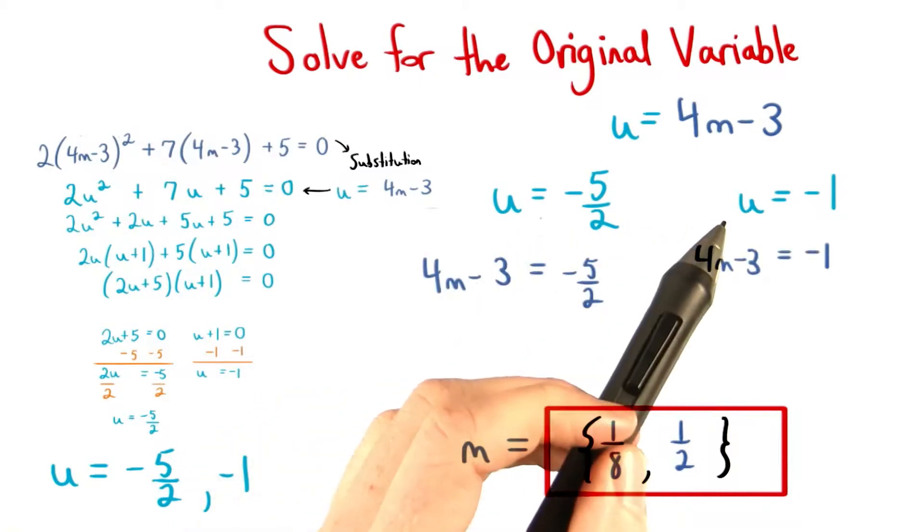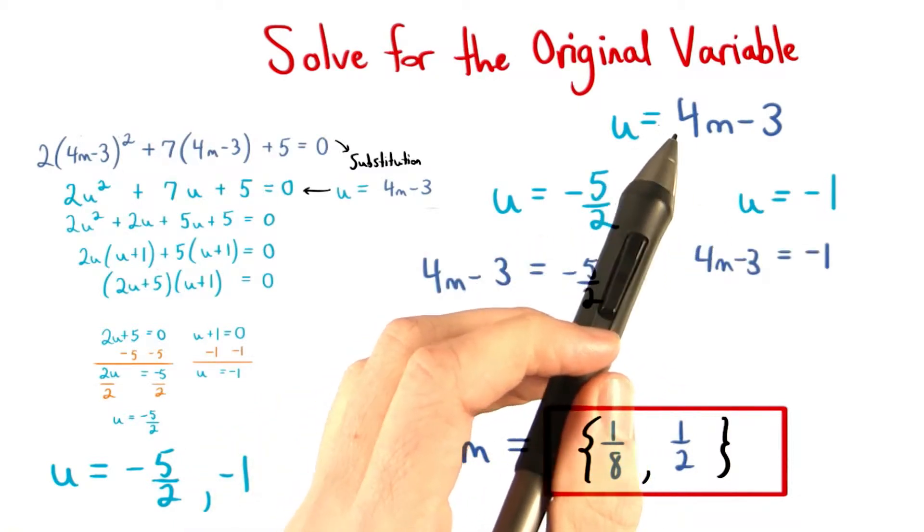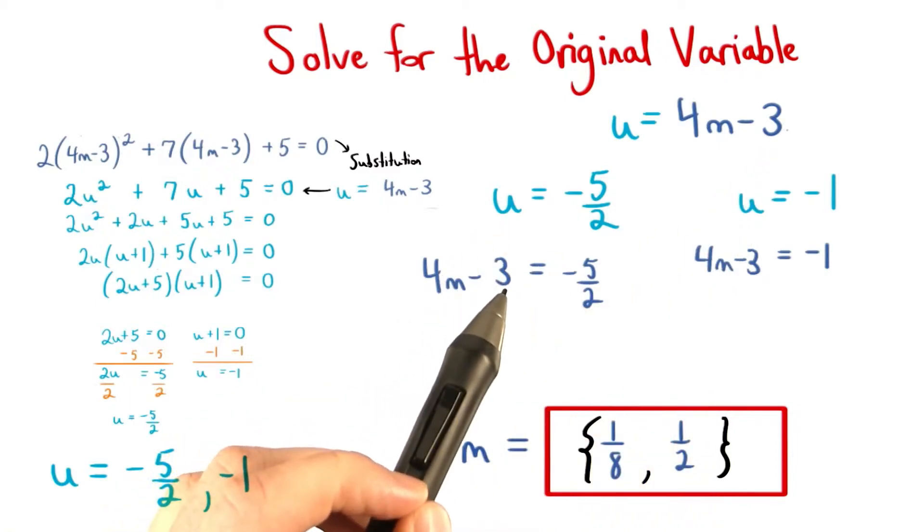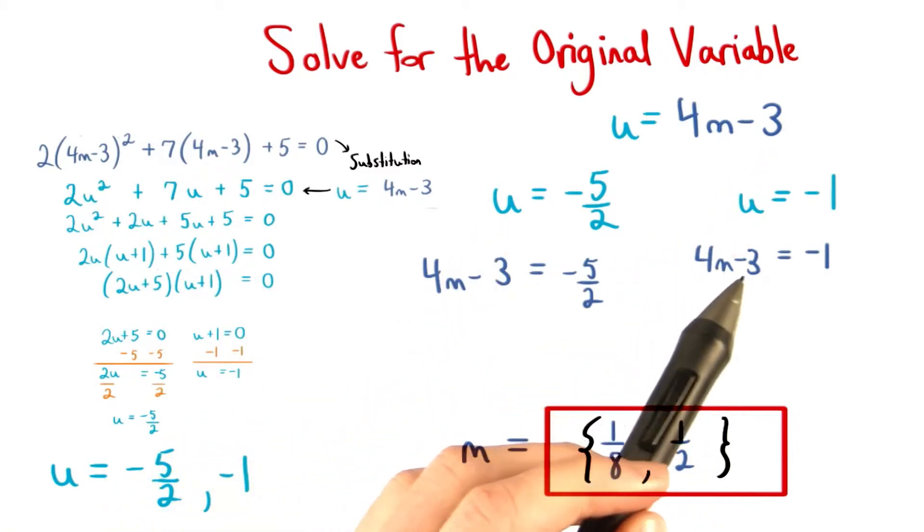We can replace u with what it equaled from our substitution, 4m minus 3. So this u becomes 4m minus 3, and this u becomes 4m minus 3 as well.